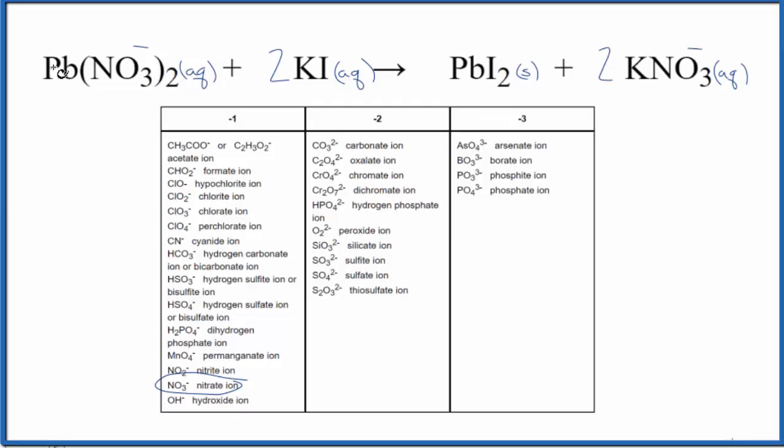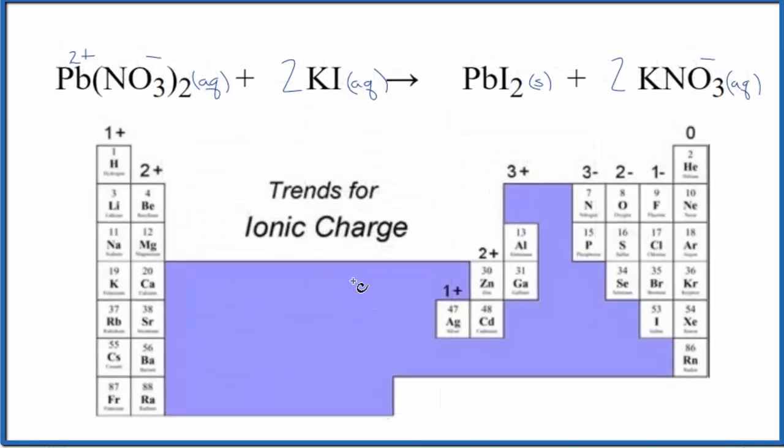Since there are two of them, that means the lead is going to have to be 2+. Lead is a transition metal. We don't always know its charge. For these other elements here, we'll need to look at the periodic table. So on the periodic table, we didn't see lead because it's a transition metal. We had to figure it out. But for potassium, that's right here in group 1. That'll be 1+. Iodine right here, over here, group 17, 7a. That'll have a negative charge. And now we can split these up into their ions pretty easily.